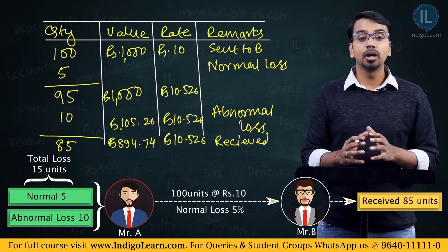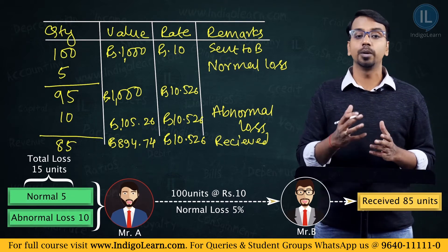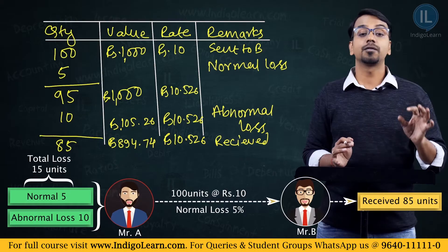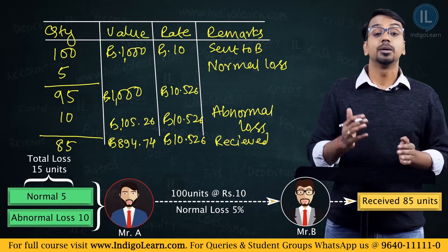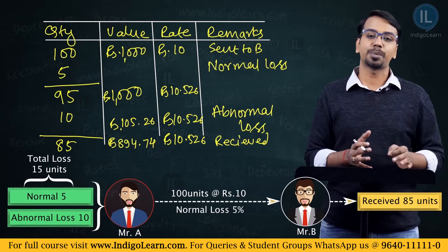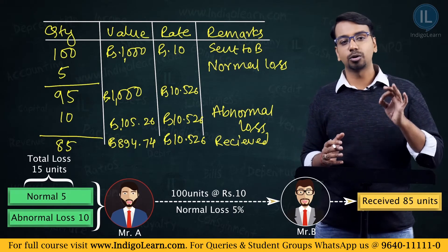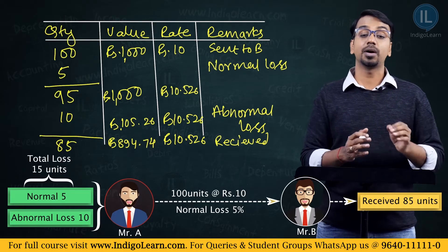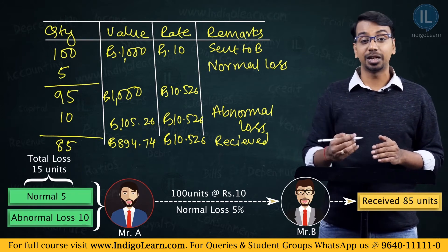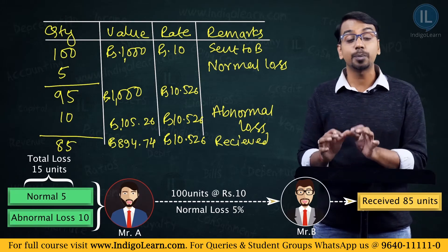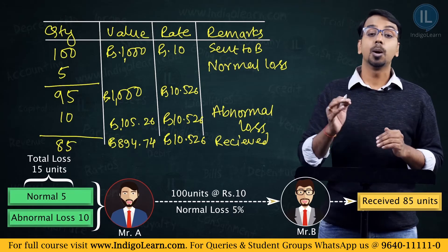If you analyze this: total cost was rupees 1000, of which abnormal loss is rupees 105.26 and goods received by the consignee are valued at rupees 894.74. These add up to rupees 1000. In summary: normal loss is included as a part of cost of inventory and loaded on the balance items — total cost divided by expected units received. Any abnormal loss is not included in inventory cost; it is debited separately to the profit and loss account.